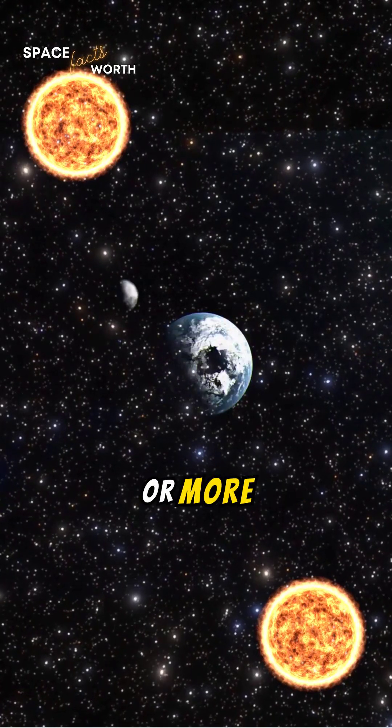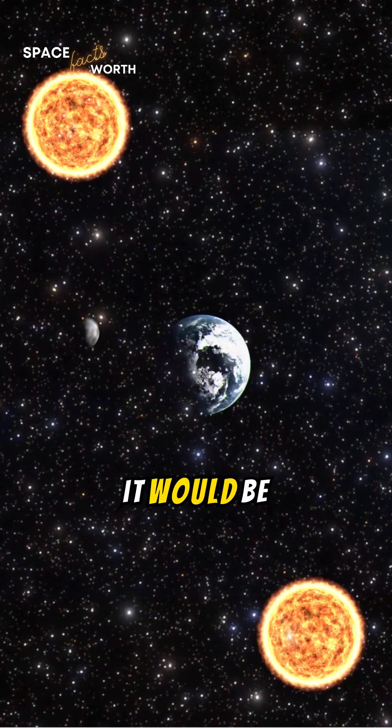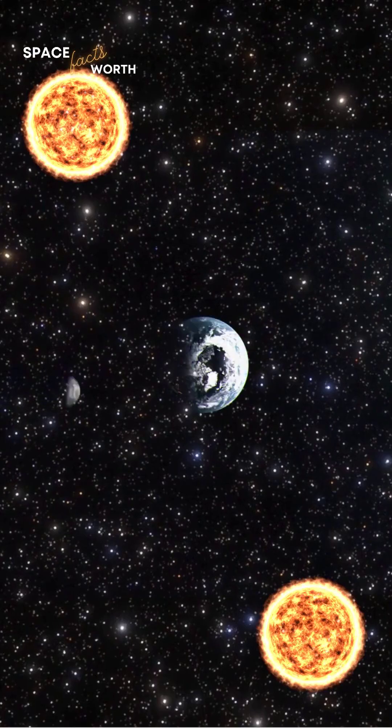If Earth orbited a system with two or more suns, life as we know it would be drastically different or non-existent.